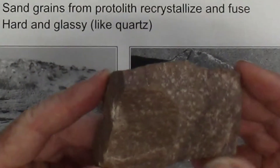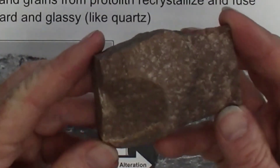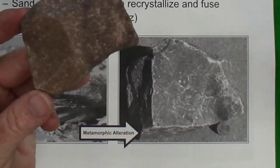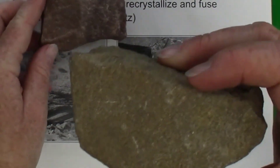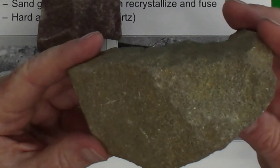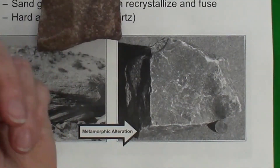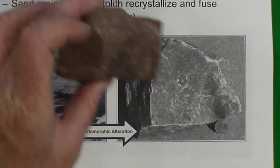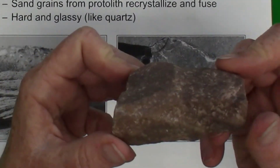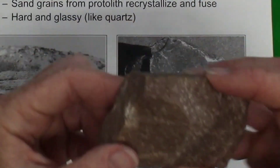Quartzite is an example of a crystalline metamorphic rock made of mostly just one mineral — quartz. Quartzite can form if you take a quartz-rich protolith, such as a sandstone dominated by quartz, and subject it to high temperatures and even high pressures. The quartz recrystallizes and forms larger crystals that are closer together, making the rock denser. This is an example of quartzite — a non-foliated rock.